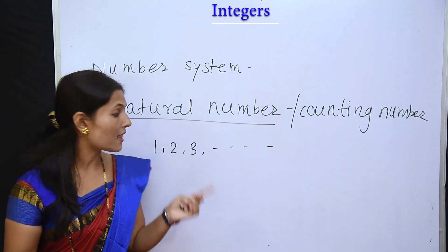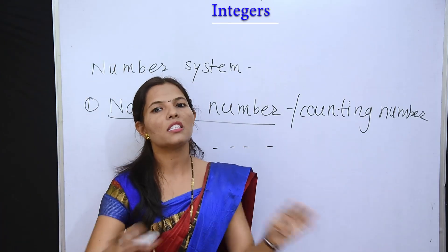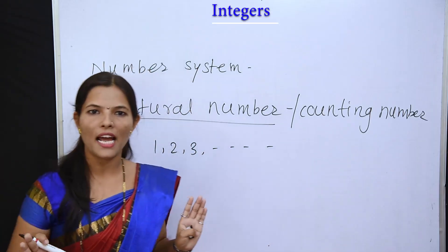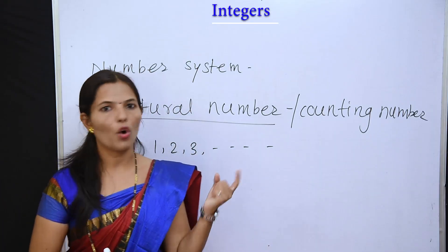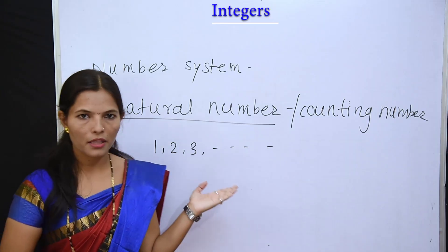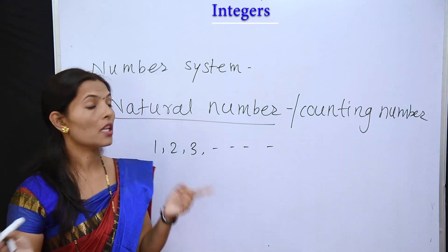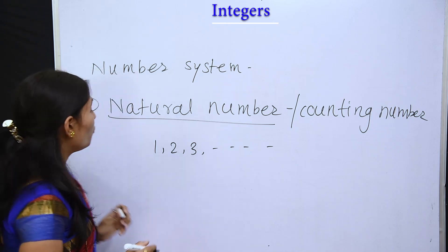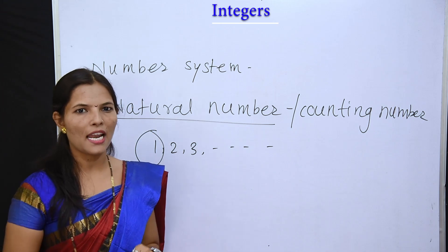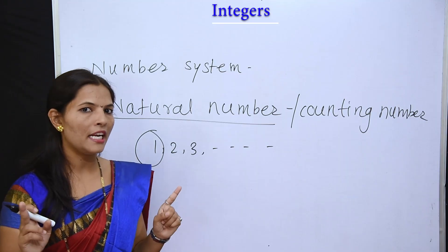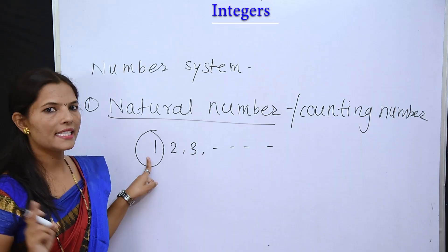Natural number starts from 1, up to infinity. Now, from any exam question that can come: what is meant by natural number? You can write the definition whichever you remember. Another question that can come: which is the smallest natural number? When that question comes, the answer is: 1 is the smallest natural number.